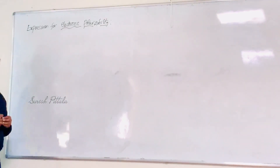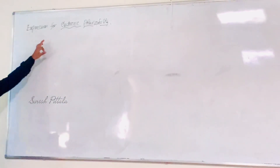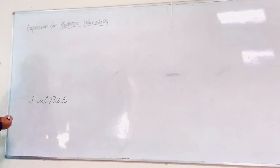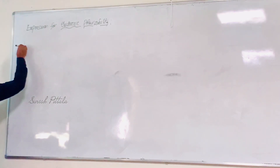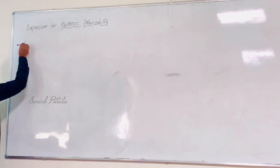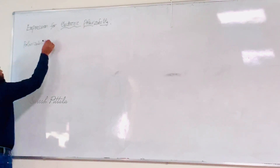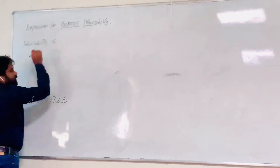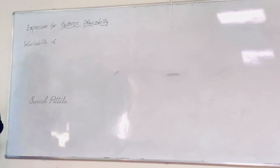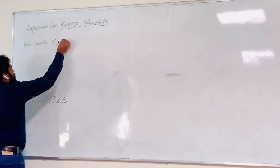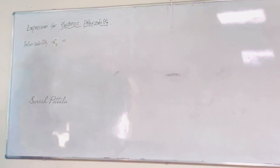Let us write what polarizability is. Polarizability is denoted with alpha. Since we are looking specifically at electronic polarizability, we call it alpha_e. So alpha_e is equal to what?